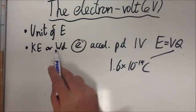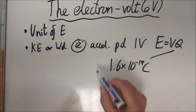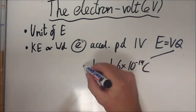The work done on an electron accelerated through a potential difference of one volt. So energy equals voltage times charge.